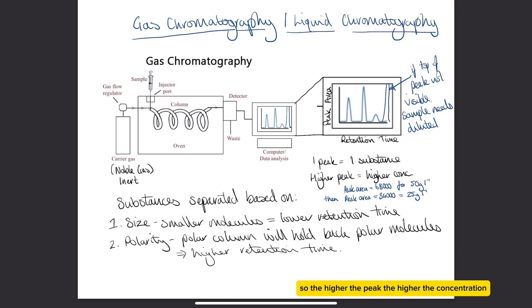The higher the peak, the higher the concentration, and the excellent thing about the area of the peaks or the height of the peaks is that they're directly proportional to concentration. So if we know that a peak area of 68,000 is a concentration of 50 grams per liter, then if we run another sample and get a peak area of 34,000, that's half the peak area, so that means the concentration would be half. It's directly proportional: the peak area versus the concentration. So we can use peak area to work out the concentrations of unknown samples.